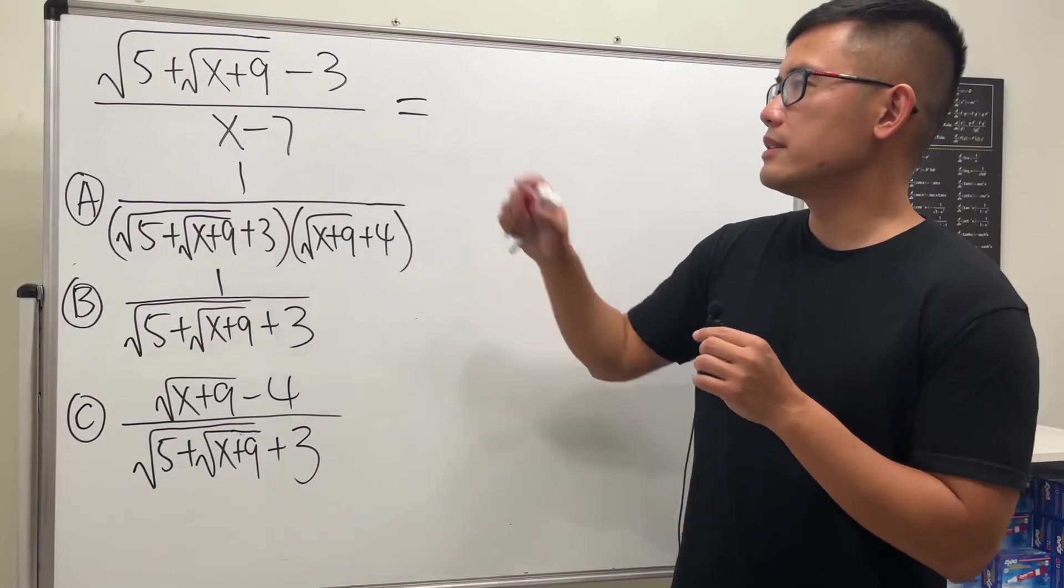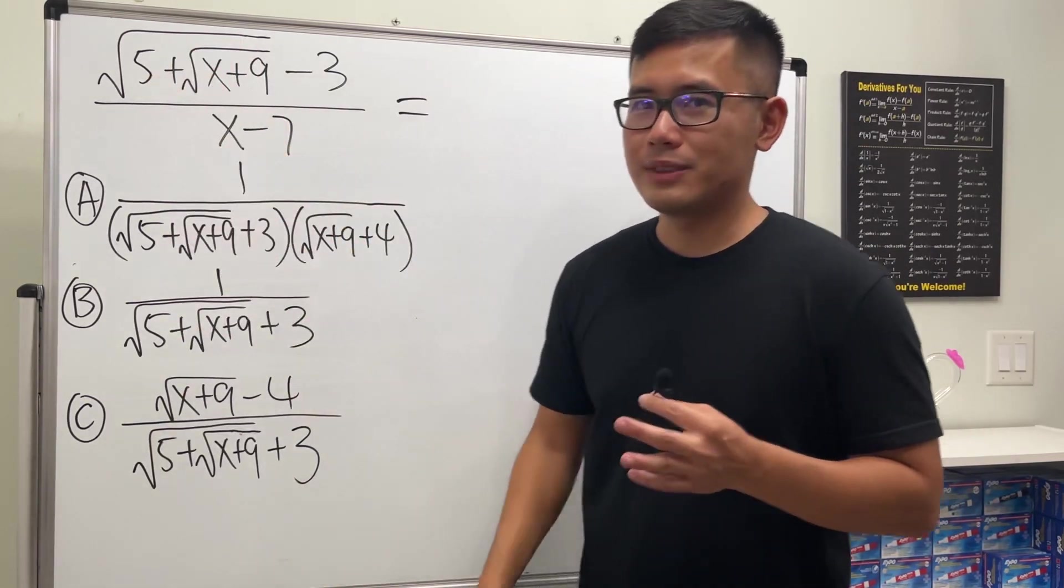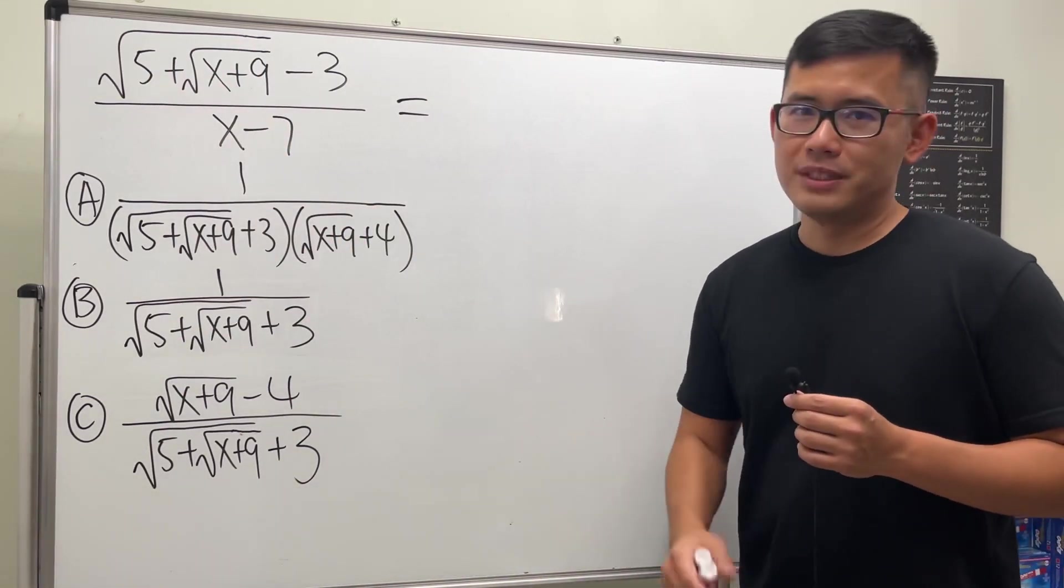Okay, let's see how we can simplify this nested square root. We have a square root inside another one - that's why it's called a nested square root. You know the deal, please pause the video and try this first.